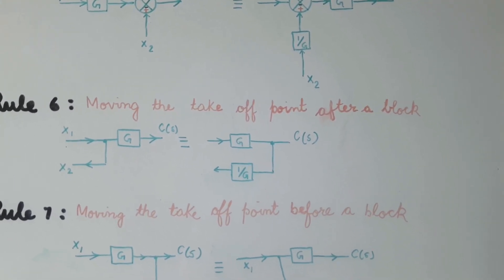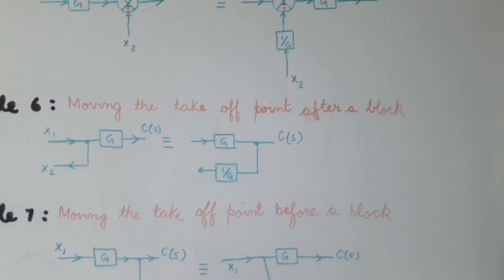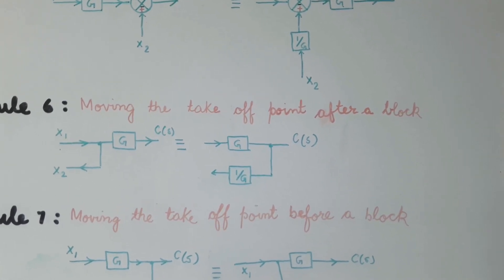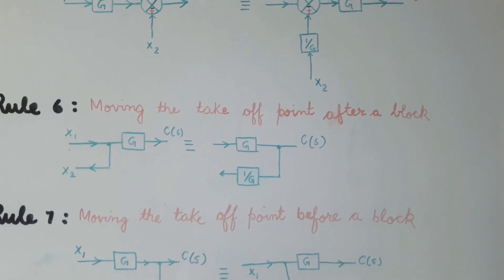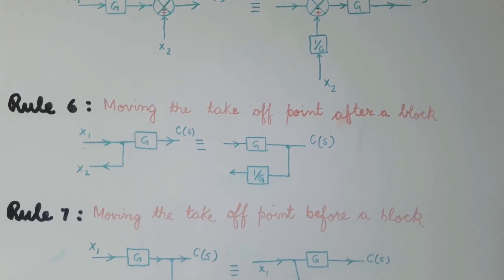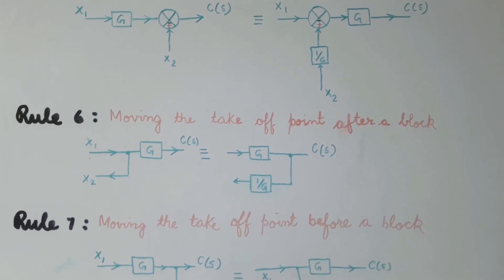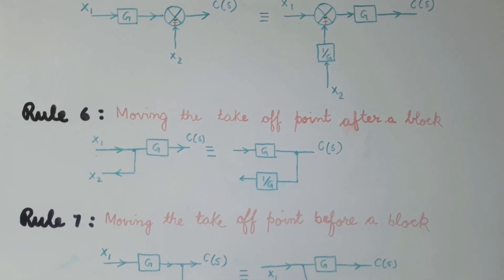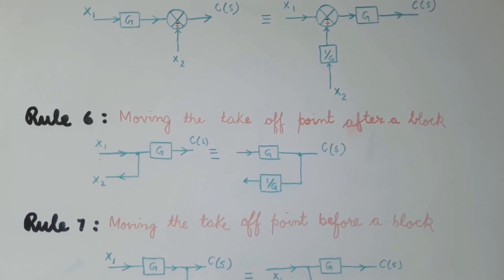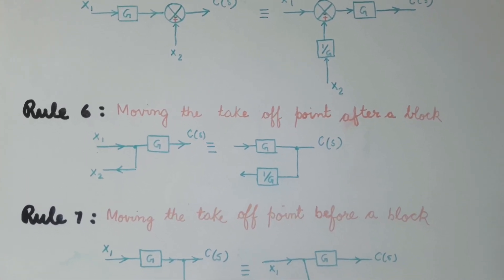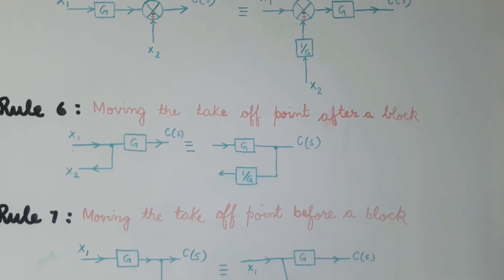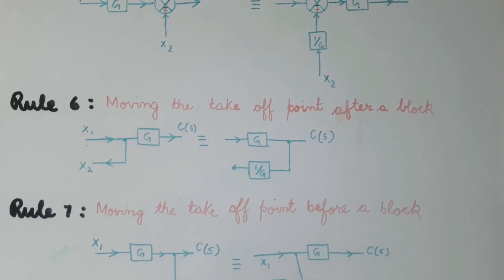Rule number 6 is how to reduce the block when we move a takeoff point after a block. This is just opposite to rule number 4 — in rule number 4, if we are moving a summing junction after the block we add a block G, but in rule number 6, when we move a takeoff point after the block, we will add a block 1/G.